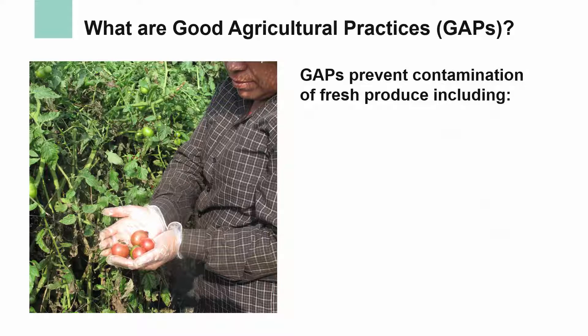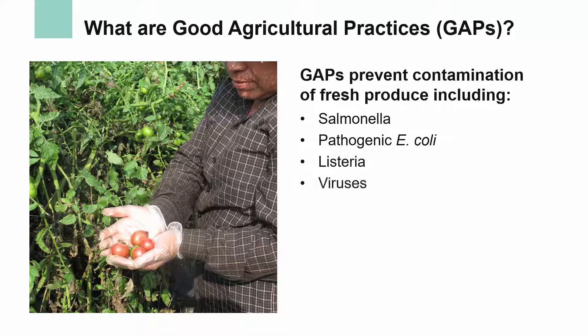What are good agricultural practices? GAPs are ways to prevent contamination of fresh produce from harmful organisms like salmonella, pathogenic E. coli, listeria, viruses, and parasites.